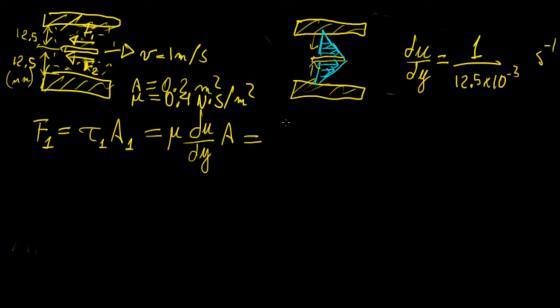So this is going to become 0.4 times 1 over 12.5 times 10 to the minus 3 times the area which is 0.2. And this is going to give us a total force of 6.4 newtons.